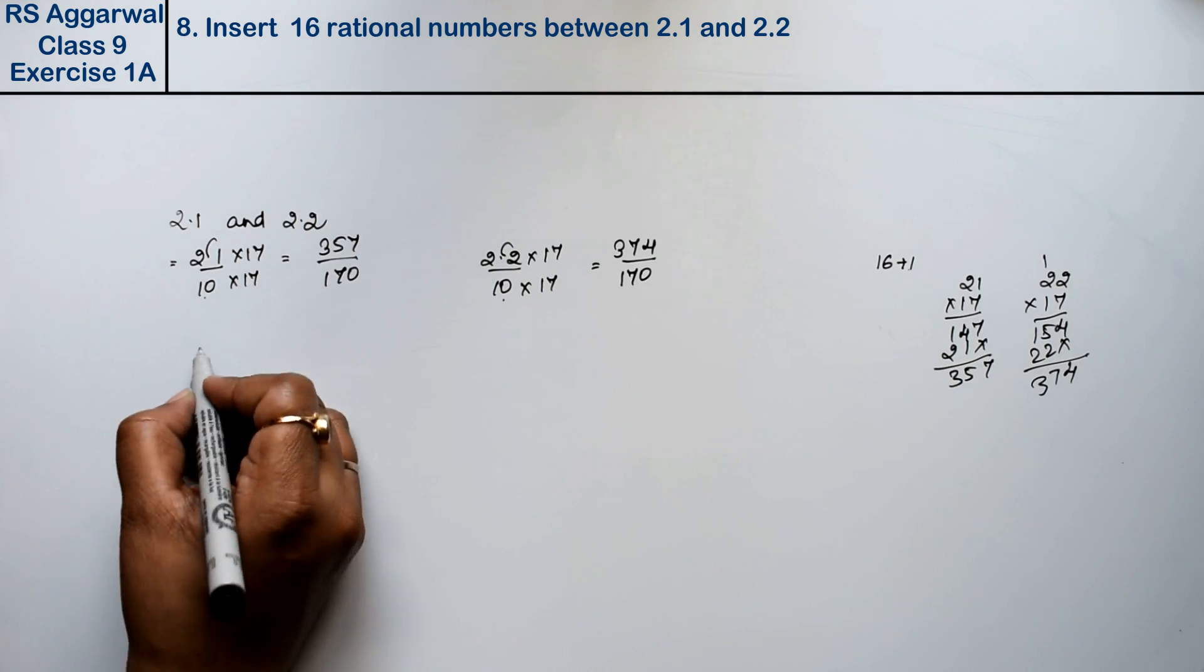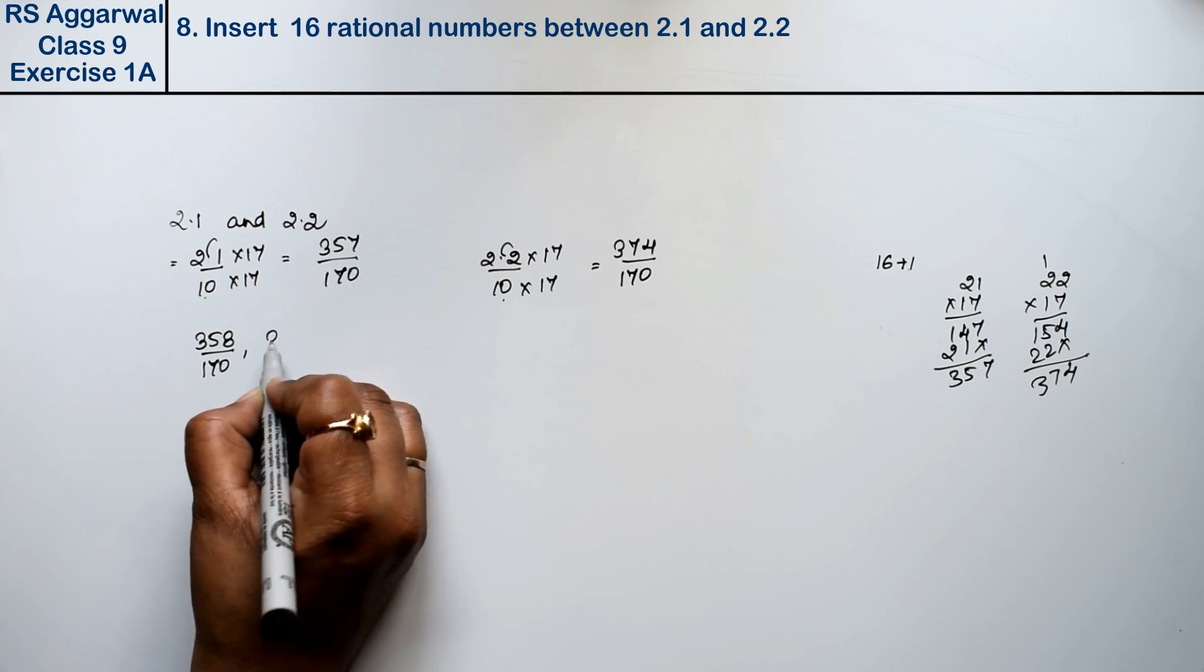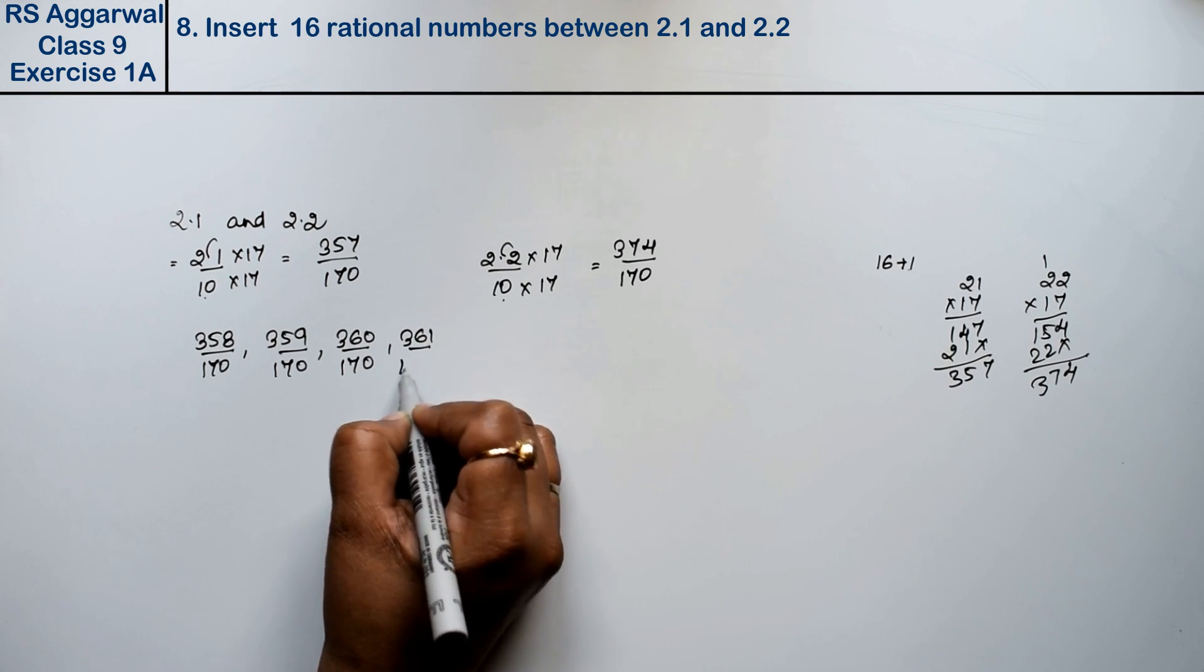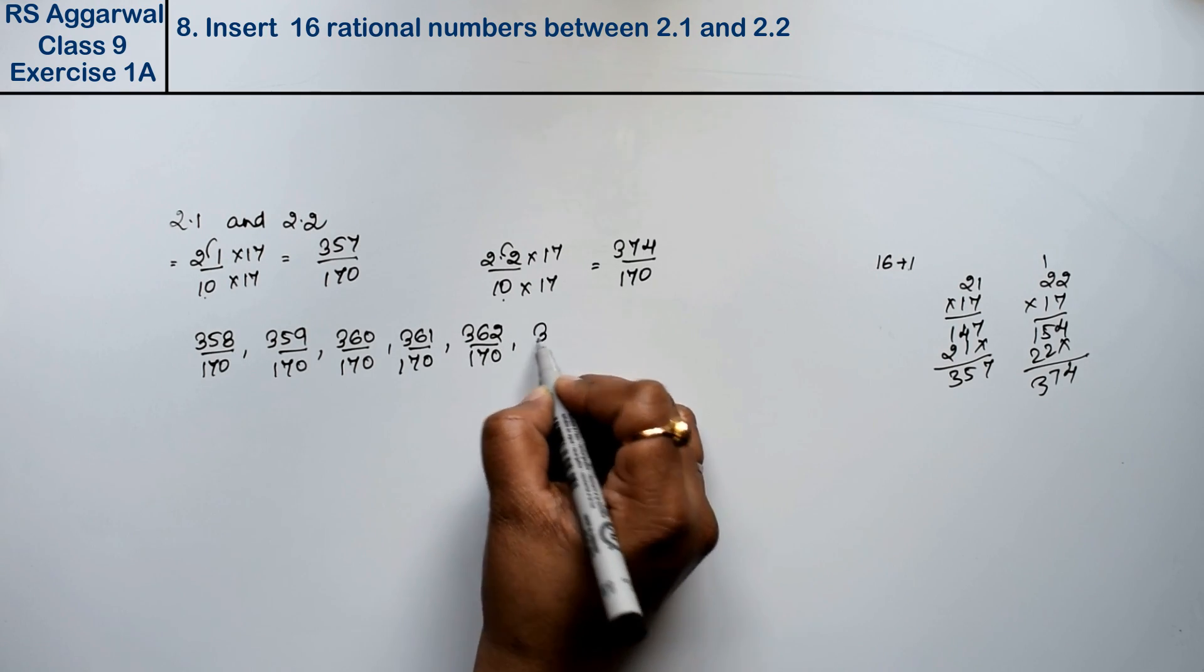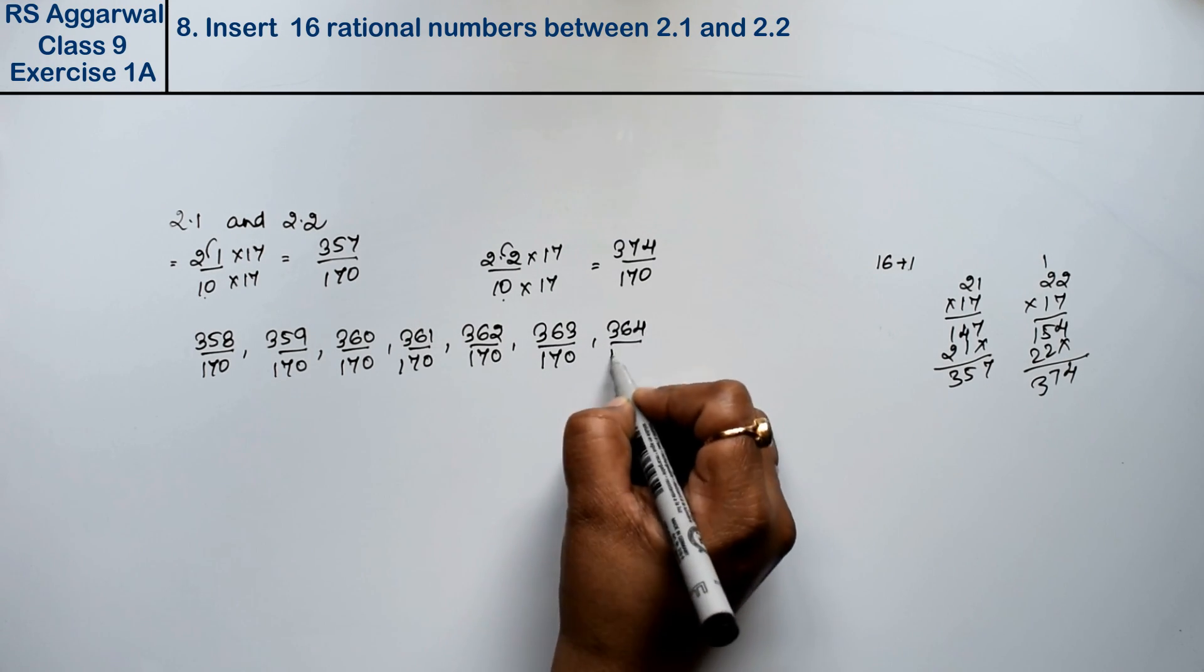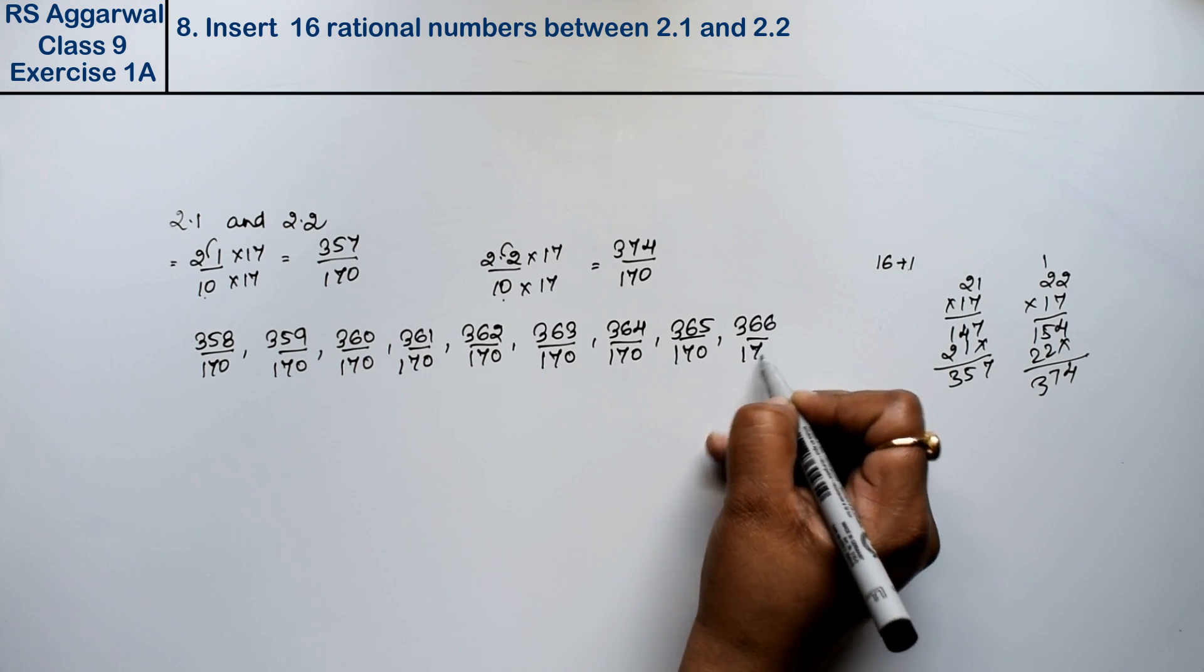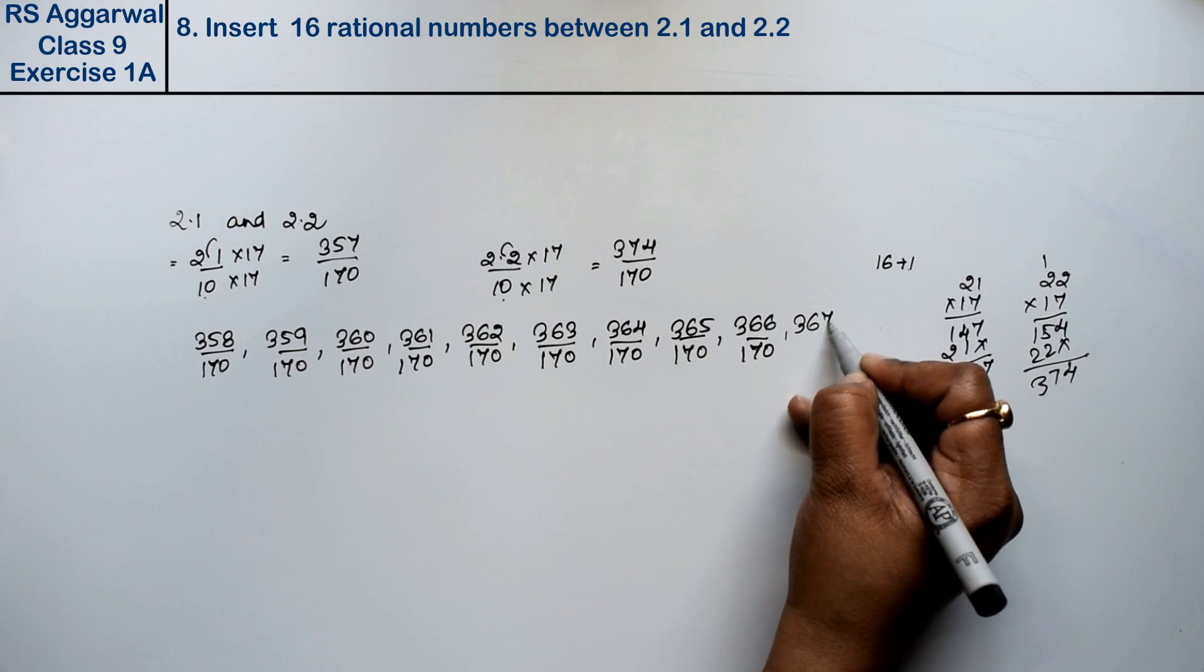Between these two numbers, we have 358 divided by 170, 359 divided by 170, 360 divided by 170, 361 divided by 170, 362 divided by 170, 363 divided by 170, 364 divided by 170, 365 divided by 170, 366 divided by 170. Counting from 1 to 10, see.